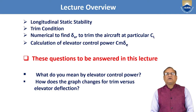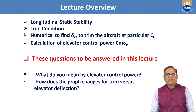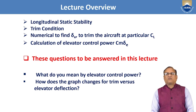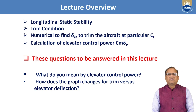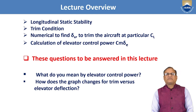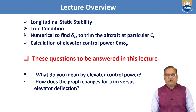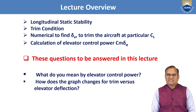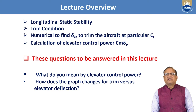In today's lecture, I am going to cover a review on longitudinal static stability. After that, I will go for the trim condition. Then a numerical to find elevator deflection to trim the aircraft at a particular coefficient of lift, and calculation of elevator control power, that is CM delta E. The following questions will be answered: what is elevator control power and how does it affect aircraft stability and the longitudinal control of the aircraft? And how does the graph delta E versus CL or CM versus CL change for trim versus elevator deflection?